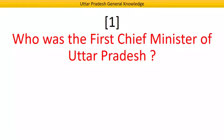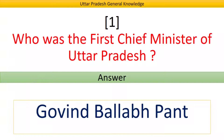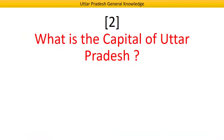Who was the first Chief Minister of Uttar Pradesh? Answer: Govind Vallabh Pant. What is the capital of Uttar Pradesh?